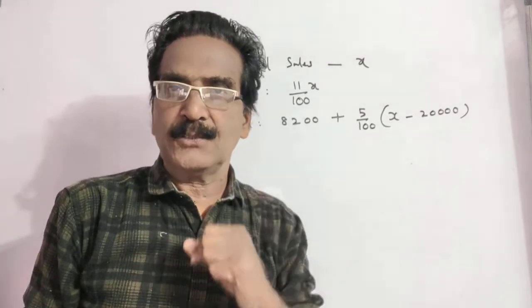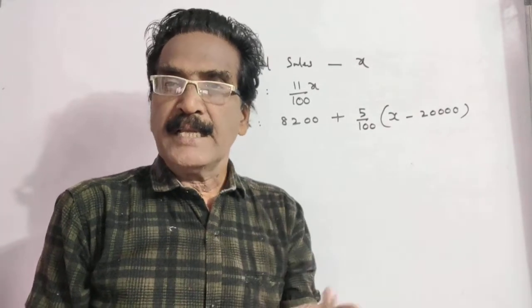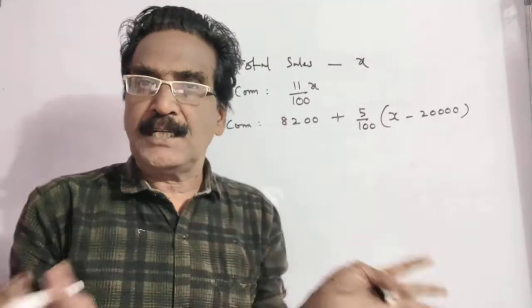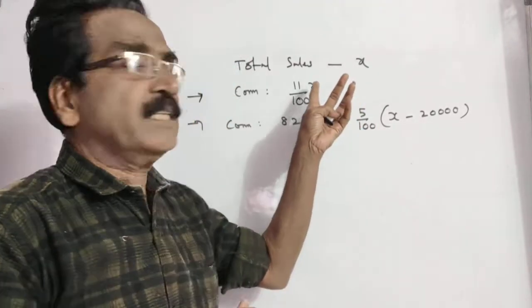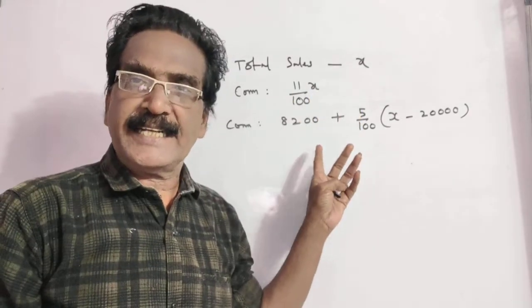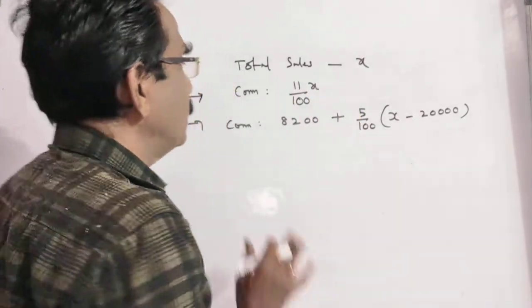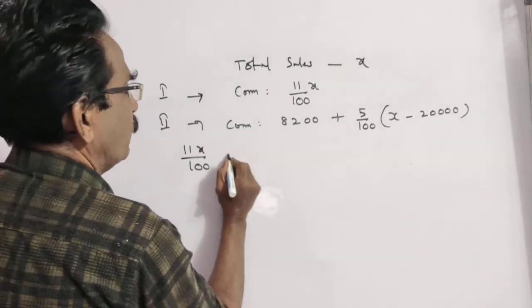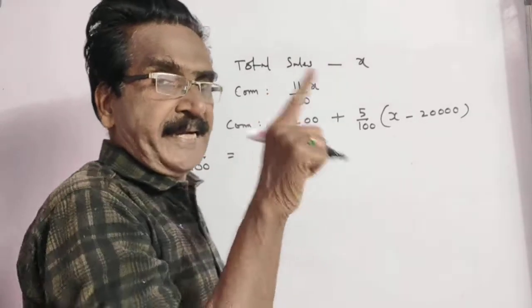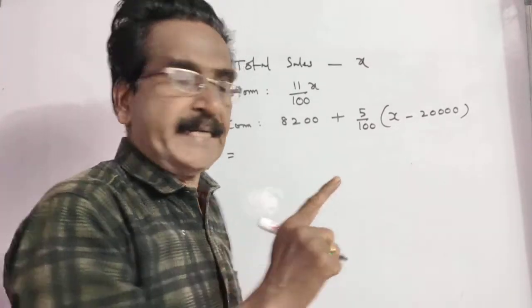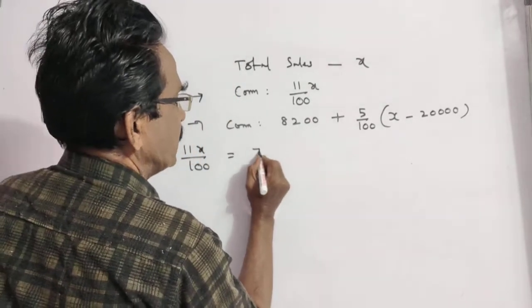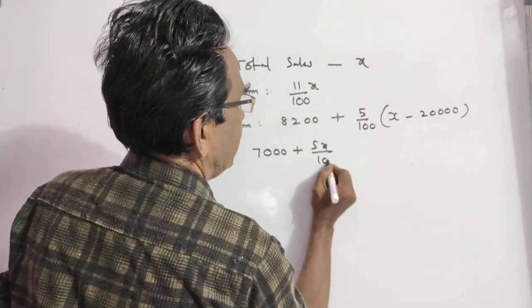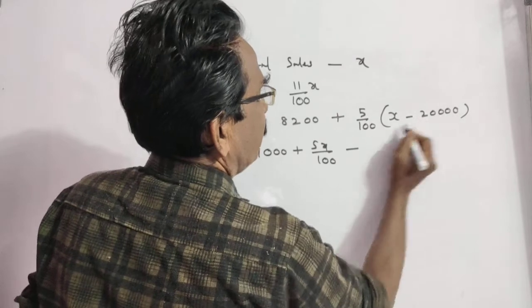In the second case, he gets Rs. 1,200 more. If you deduct that Rs. 1,200, then the commission both in the first case and in the second case are equal. So, 11x/100 is equal to 8,200 minus 1,200. That gives 7,000 plus 5x/100 minus 5x/100.